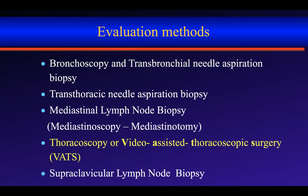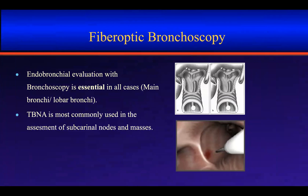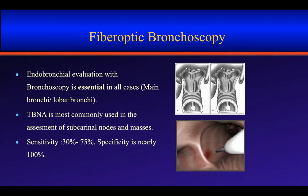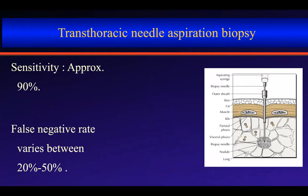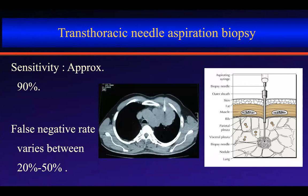If the patient has a supraclavicular lymph node, biopsy there can provide a diagnosis. Fiber optic bronchoscopy is useful for hilar tumors or subcarinal nodes, but sensitivity is around 50% for diagnosis. Transthoracic needle aspiration biopsy is a very straightforward procedure for peripheral tumors. This chest CT section shows a patient undergoing transthoracic needle aspiration biopsy — the needle is inside the tumor — it is very easy to obtain biopsy material from the tumor this way.